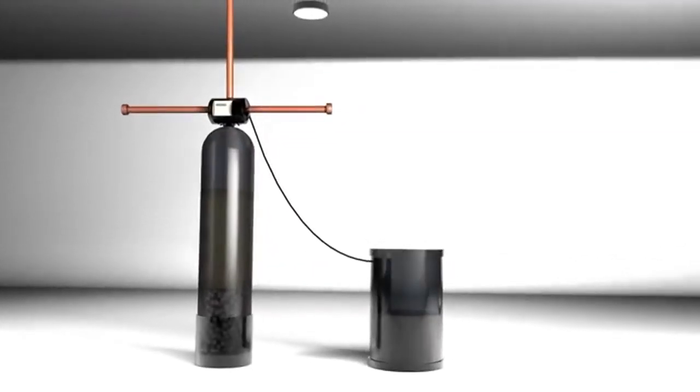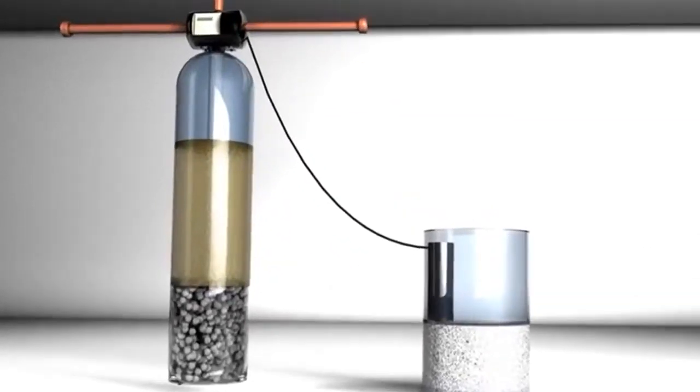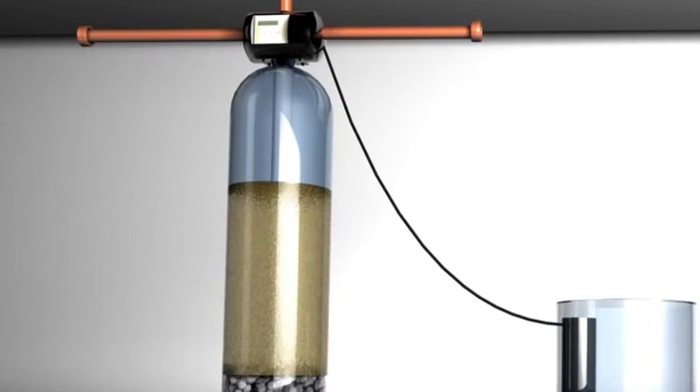Before we see the process, let's take a minute to identify the various parts of the system. The first area is the freeboard. Freeboard is the area where resin is allowed to expand. This area also allows the dirt that is collected on top of the resin bed to be flushed out.